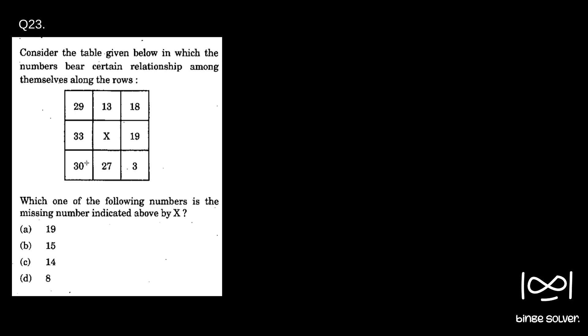It applies here also. So 29 plus 13 plus 18 equal to 60. Similarly, 30 plus 27 plus 3 equal to 60. So using the same logic, 33 plus X plus 19 should be 60.